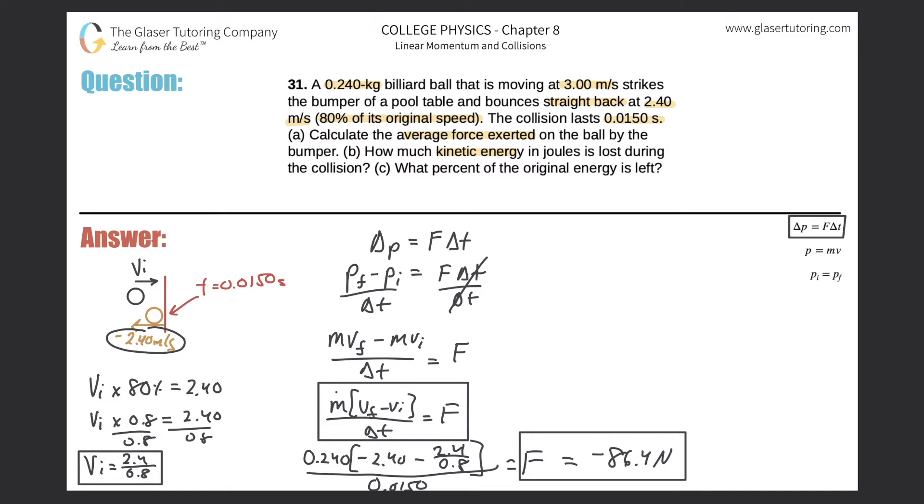How much kinetic energy in joules is lost during the collision? This was letter A, let's cover letter B. We can come up with a very simple formula. We can write that the kinetic energy lost should equal the initial kinetic energy minus the final kinetic energy. That should make sense. If the kinetic energy initially coming into the bumper is larger than what leaves, didn't we lose some kinetic energy along the way?